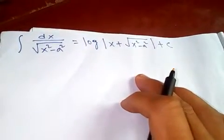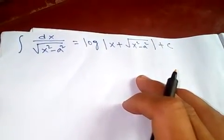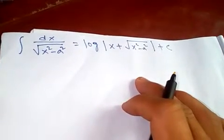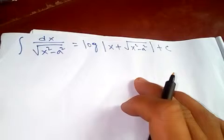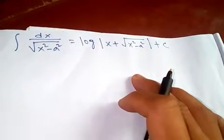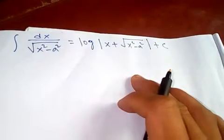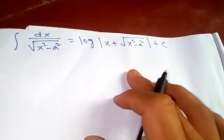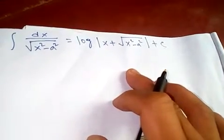Thanks for watching my video. Today I'm going to prove a special integral, which is: integral of dx over square root of x squared minus a squared equals log of x plus square root of x squared minus a squared, plus constant of integration, where a is a constant.